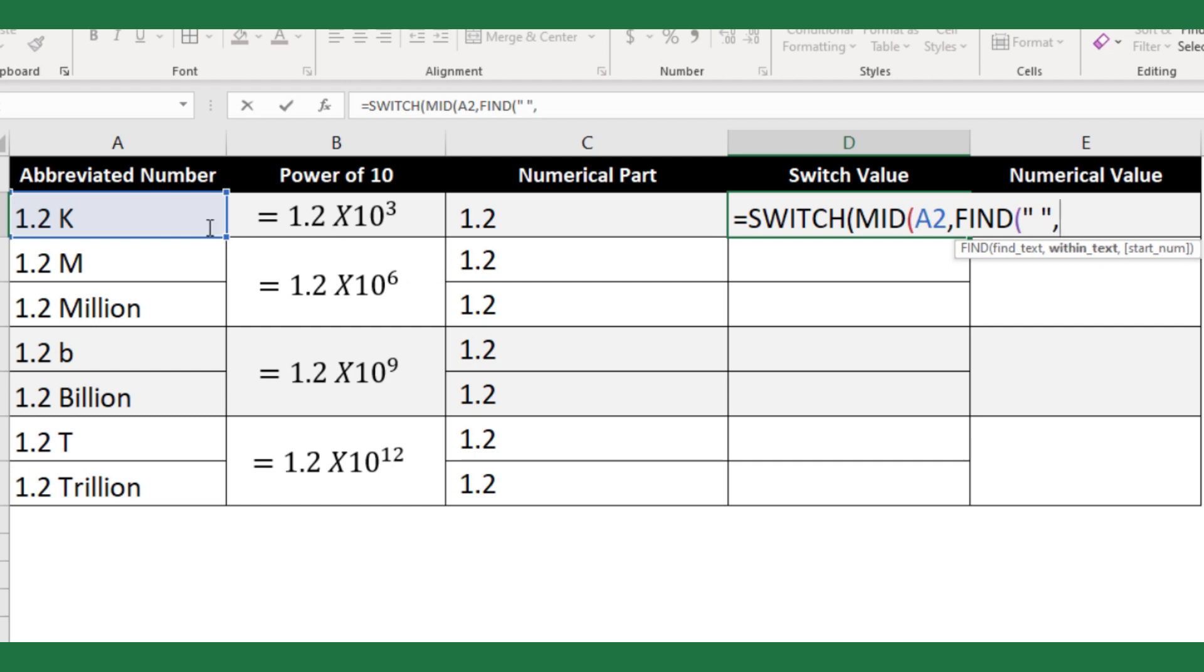Space character will be my find text argument. Next argument will be cell A2. Leave the start num argument default. Then add one since I need the first letter from the first space character. Next, the num chars argument will be one. Then close the bracket. So our expression argument is ready.